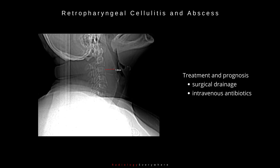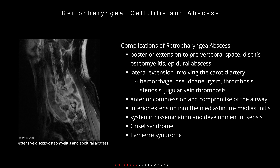Treatment includes surgical drainage and intravenous antibiotics. Complications of retropharyngeal cellulitis and abscess include: posterior extension to the prevertebral space causing discitis, osteomyelitis, and epidural abscess; lateral extension involving the carotid artery leading to hemorrhage, pseudoaneurysm, thrombosis, stenosis, and jugular vein thrombosis; anterior compression and compromise of the airway; inferior extension into the mediastinum resulting in mediastinitis; systemic dissemination and development of sepsis; Grisel syndrome; and Lemierre syndrome.